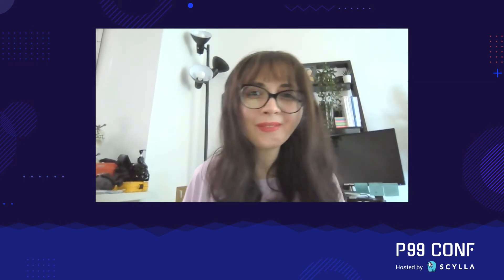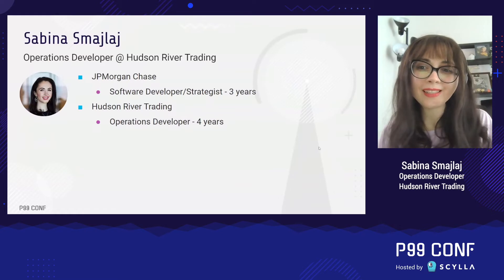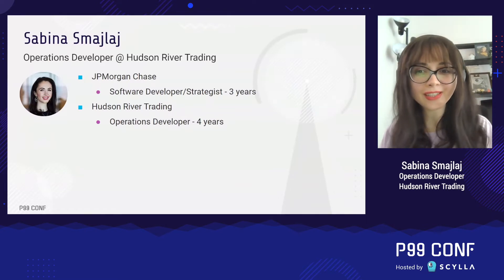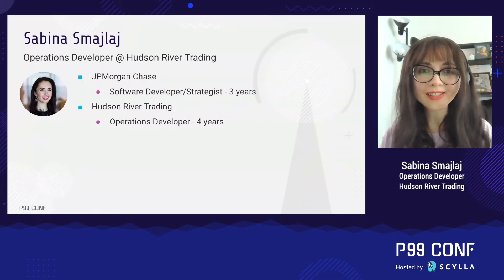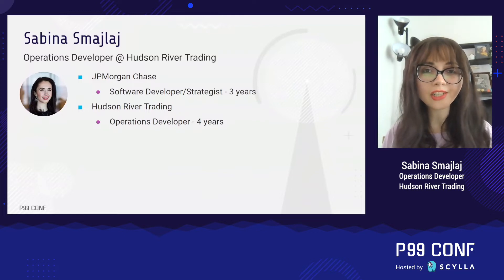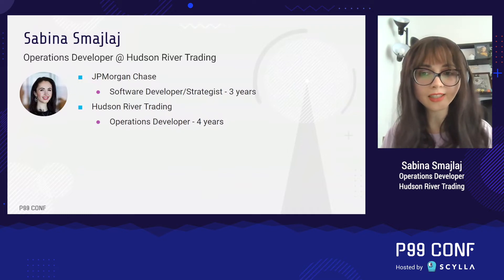Hi, and welcome to Speed Up Your Code Through Asynchronous Programming. My name is Sabina Smiley. Before we dive in, I want to give a short summary of my background. I've spent my career working with high-impact critical systems. I started my career at J.P. Morgan, where I built technology that made trading decisions for the commodities front office group that handled billions of dollars.